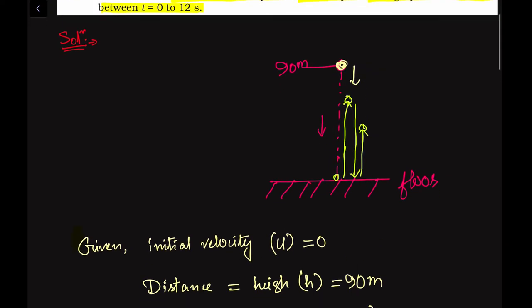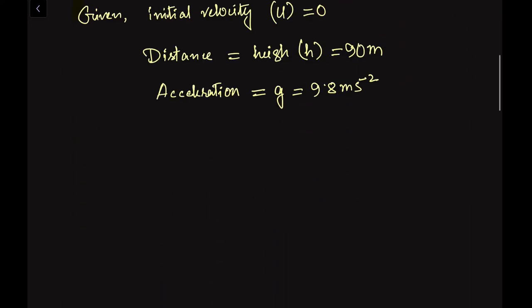When the ball is falling downward, the gravitational pull also acts downward, so we assume g to be positive. When the ball bounces back and moves upward, the direction of motion and the gravitational pull direction will be opposite, so in that case g will be negative.